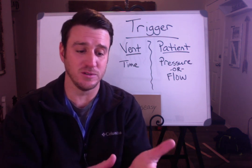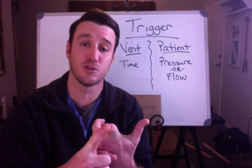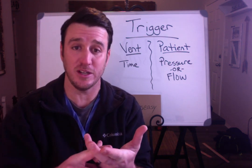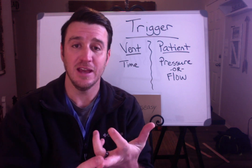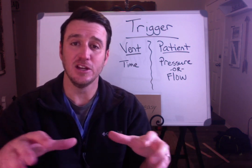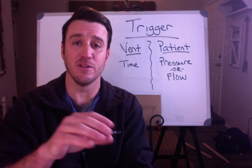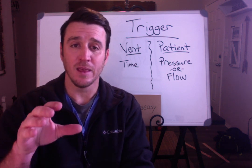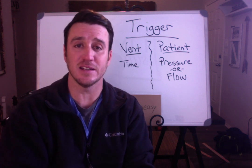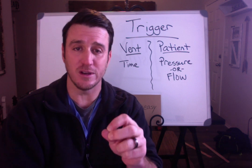There are typically three variables you have to understand. You have to know what starts the breath — that's trigger. You have to know what ends the breath, meaning what terminates inspiration — that's cycle. And you also need to know what will not be exceeded during a mode of mechanical ventilation — that is limit. All three together could be another video, but today I just want to focus on trigger.